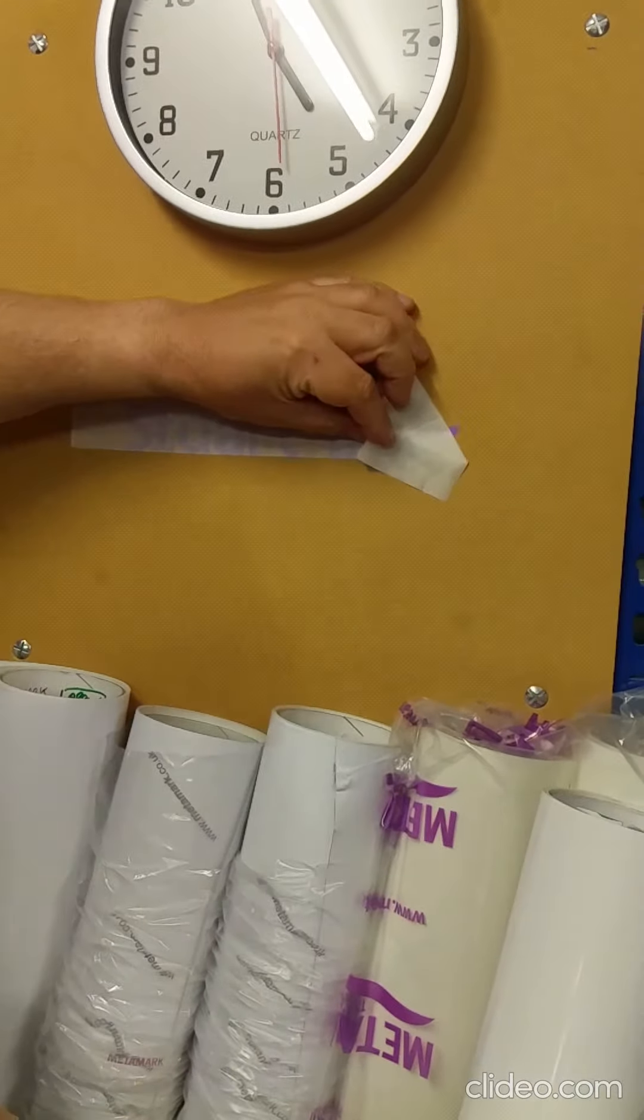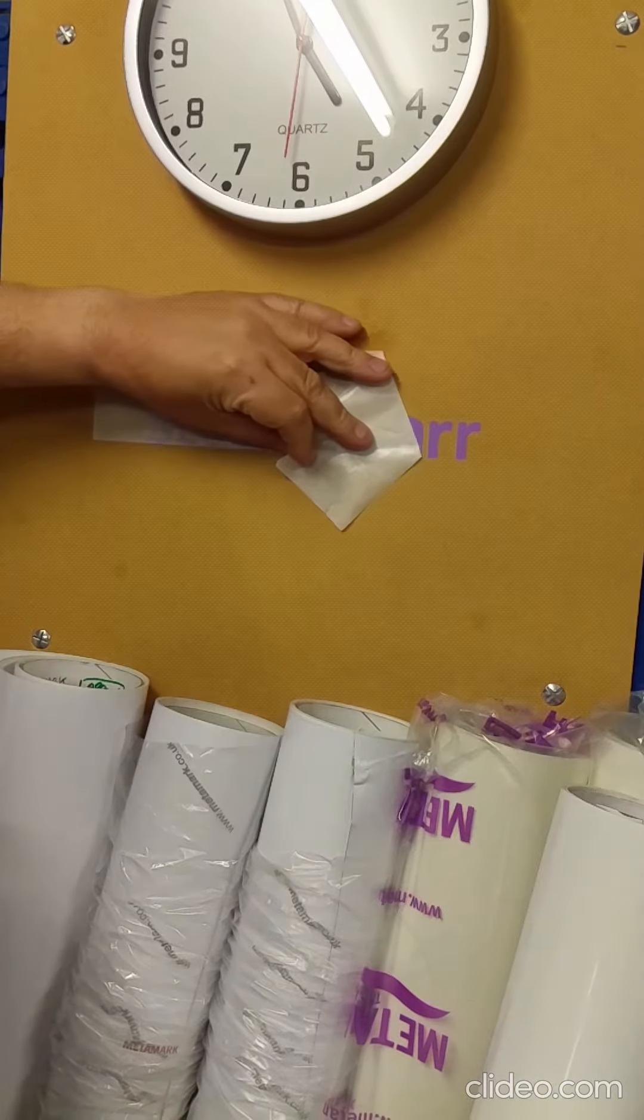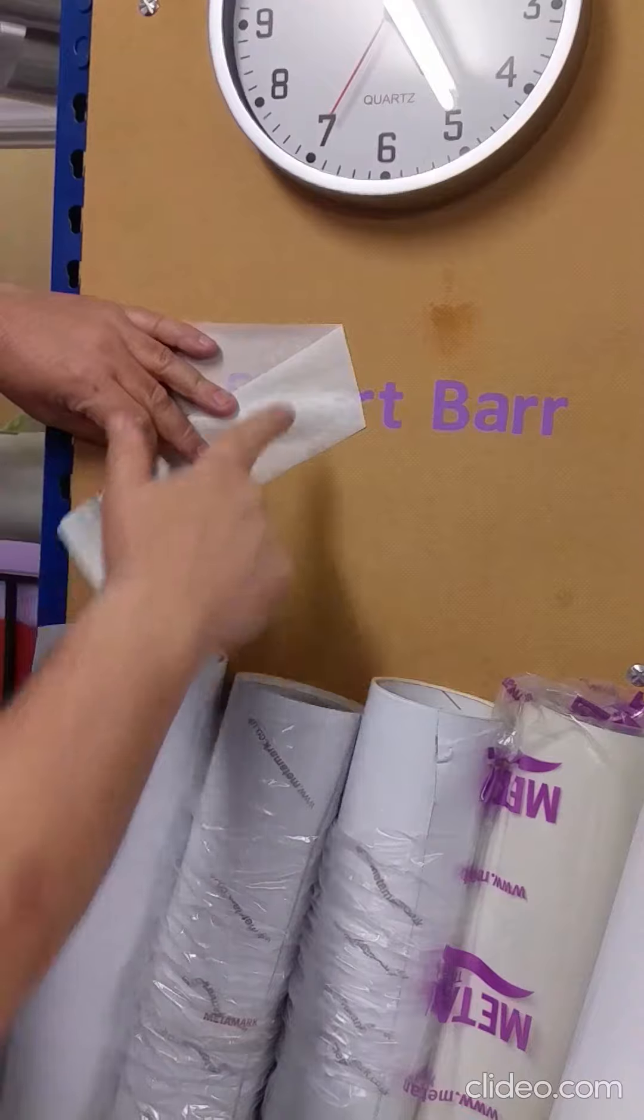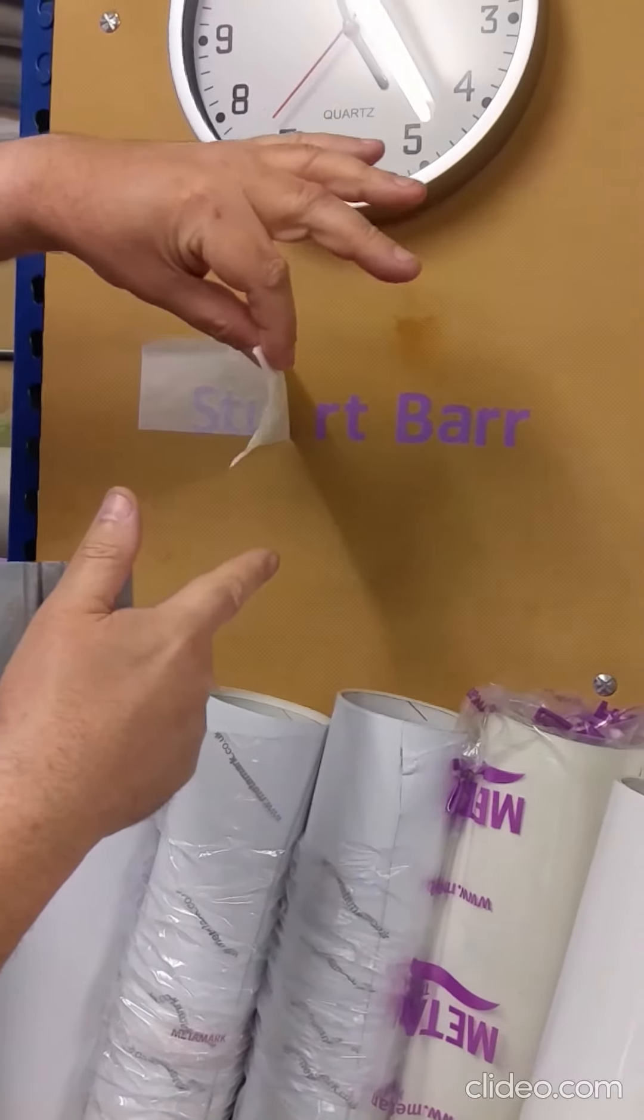Then carefully remove the vinyl tape. The letters should stay behind. You notice I'm folding it rather than pulling like that, because that could pull the letters off.